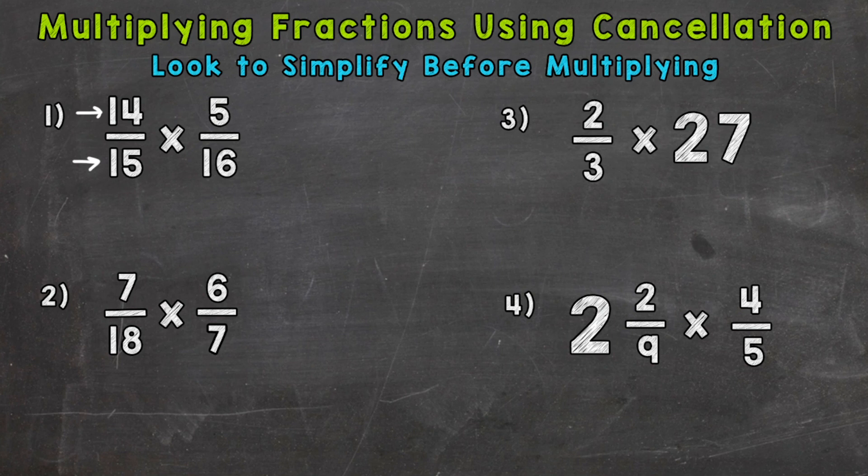So for example, looking for common factors here, I know that 15 and 5 have a common factor of 5. So let's divide both 15 and 5 by that common factor of 5. 15 divided by 5 is 3. 5 divided by 5 is 1.